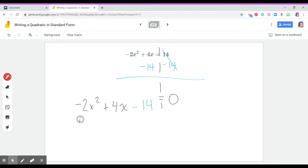So I can go ahead and identify that the a, no like terms here, so there's nothing to combine. a is negative 2, b is 4, and our c value is negative 14.